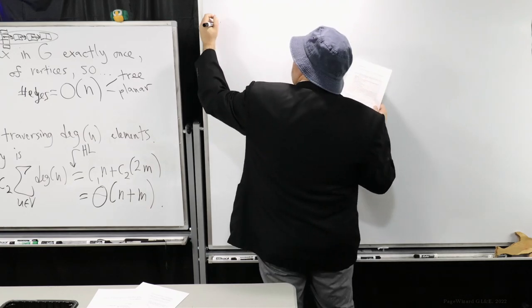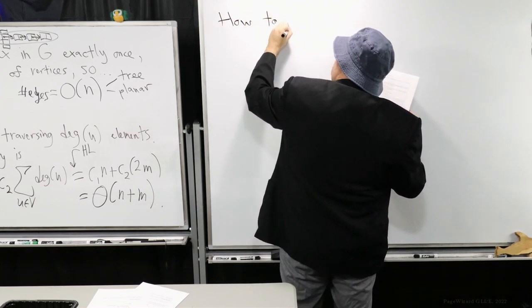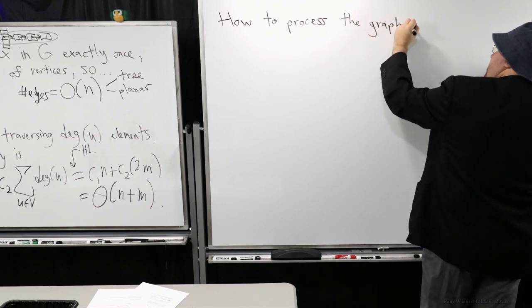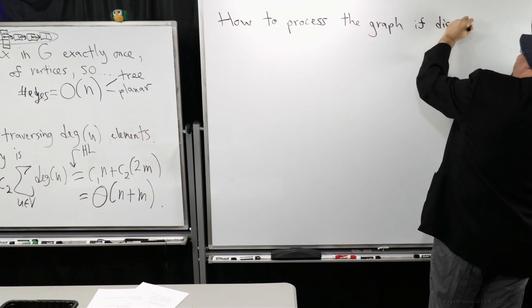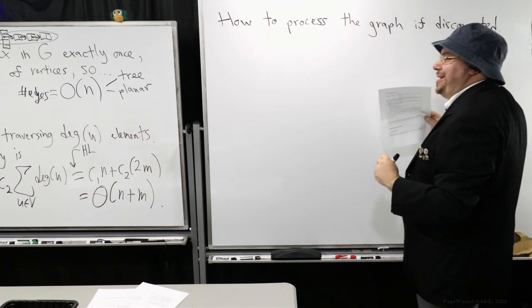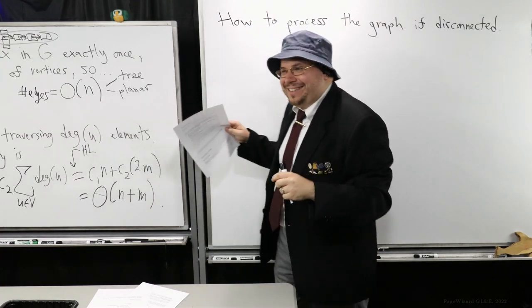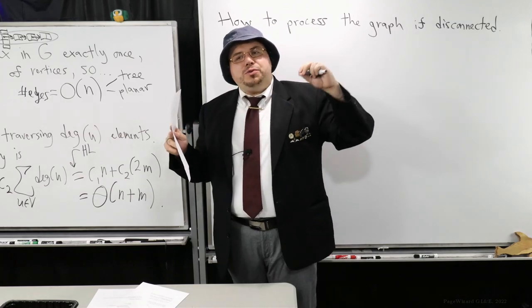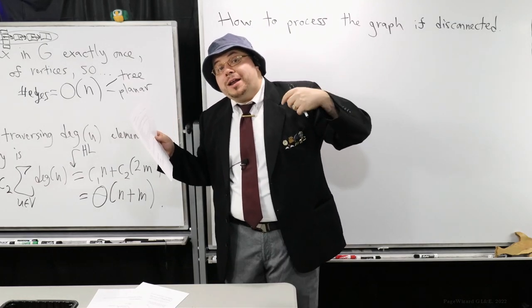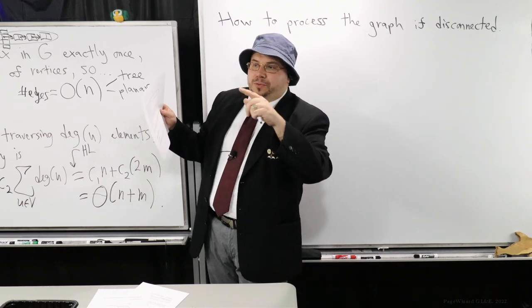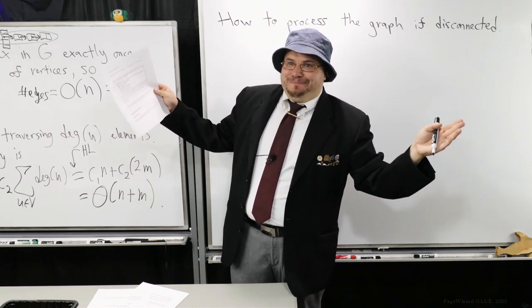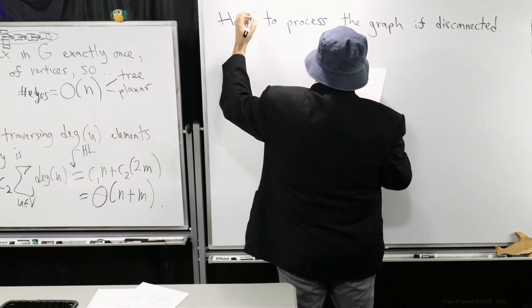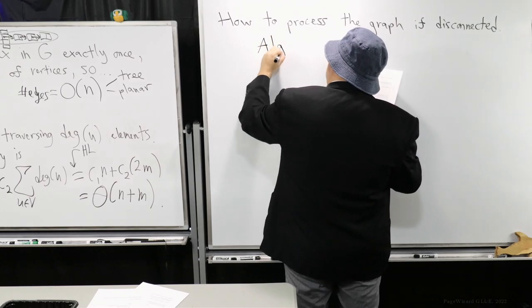To ensure the algorithm visits every vertex: under the presumption that the graph is connected, DFS on a single vertex will get everything and process the entire graph. However, if it's disconnected — meaning there exist multiple connected components — you just go through each vertex, and if a vertex is not yet marked, run DFS on it.